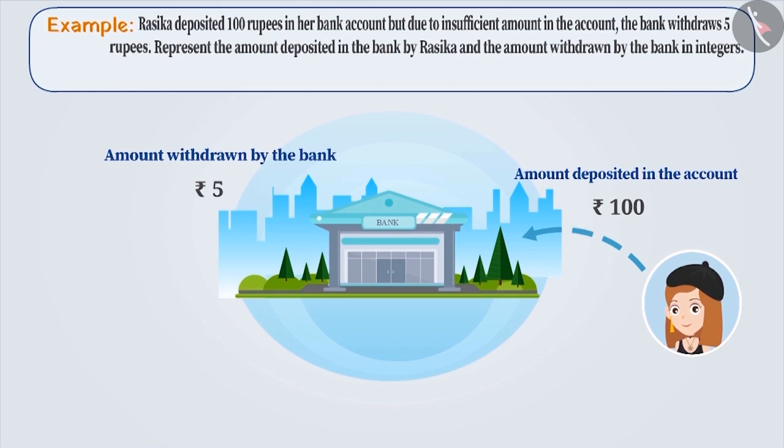Depositing money into a bank account and withdrawing money from a bank account are contrast situations. Generally, we express the deposited amount with a positive sign and the withdrawn amount with a negative sign. Similarly, the amount deposited will be expressed as plus 100 and the amount withdrawn will be expressed as minus 5.